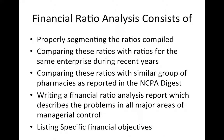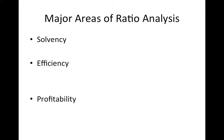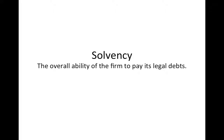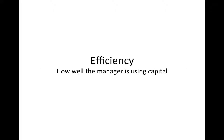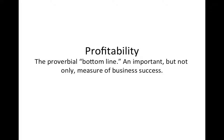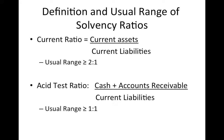We're going to have another lecture to help you apply these principles. The last topic is financial ratio analysis — taking these statements and comparing them year to year and against reports like the NCPA Digest to see how we're doing financially. The major areas of ratio analysis are solvency — the overall ability to pay legal debts; efficiency — how well we're using our capital; and profitability — the bottom line measure of our success.